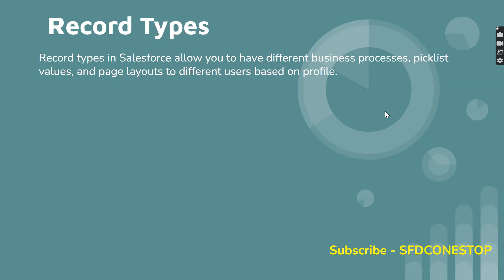Let us understand record types by taking a business use case. In your Salesforce org, consider that users should be able to create various accounts. There could be different accounts like customer accounts or partner accounts. When users try to create a customer account, they should be able to see a different subset of values for the industry field, and when they create a partner account, they should see a different set of values. This business use case can be achieved by creating different record types in Salesforce.